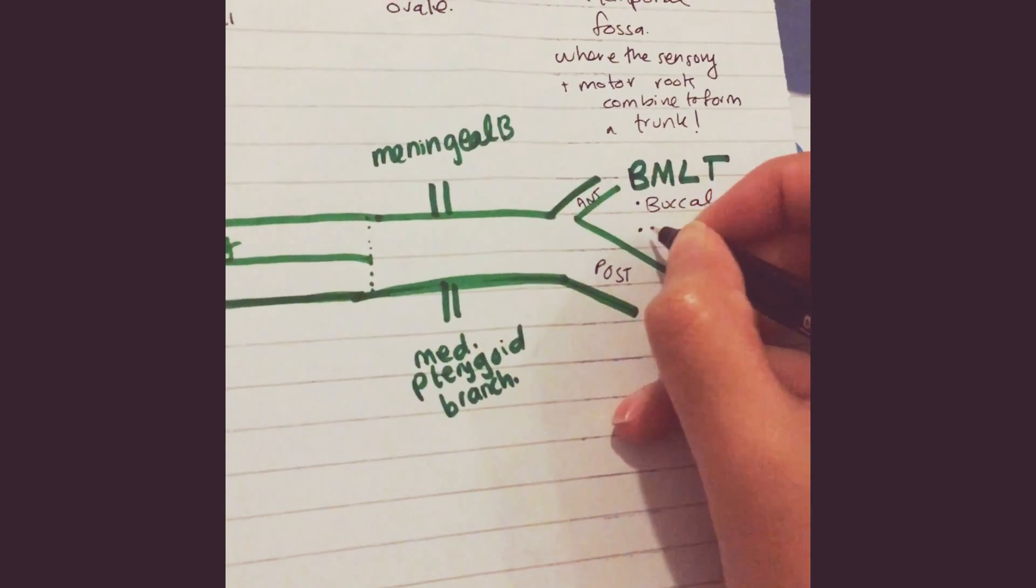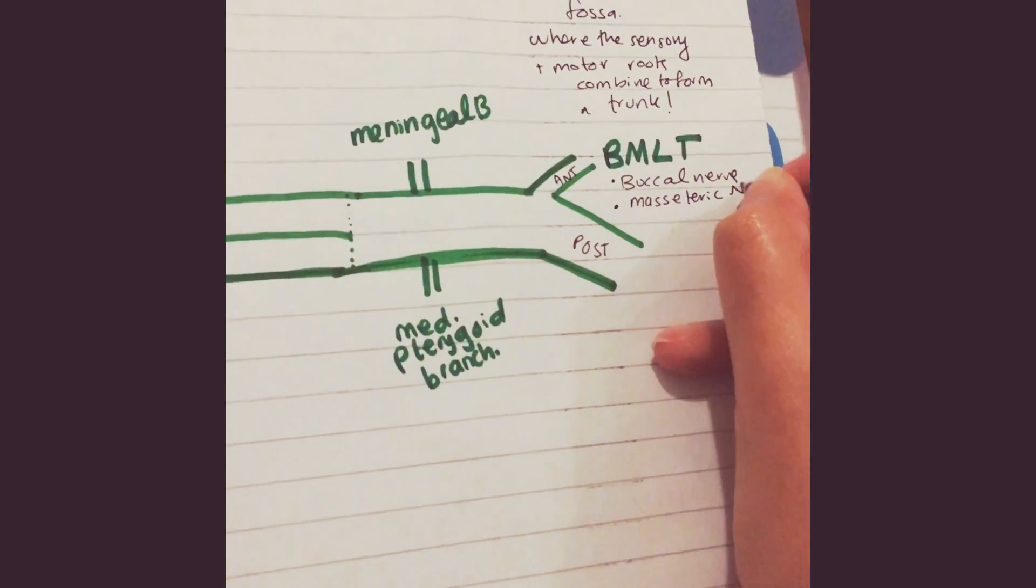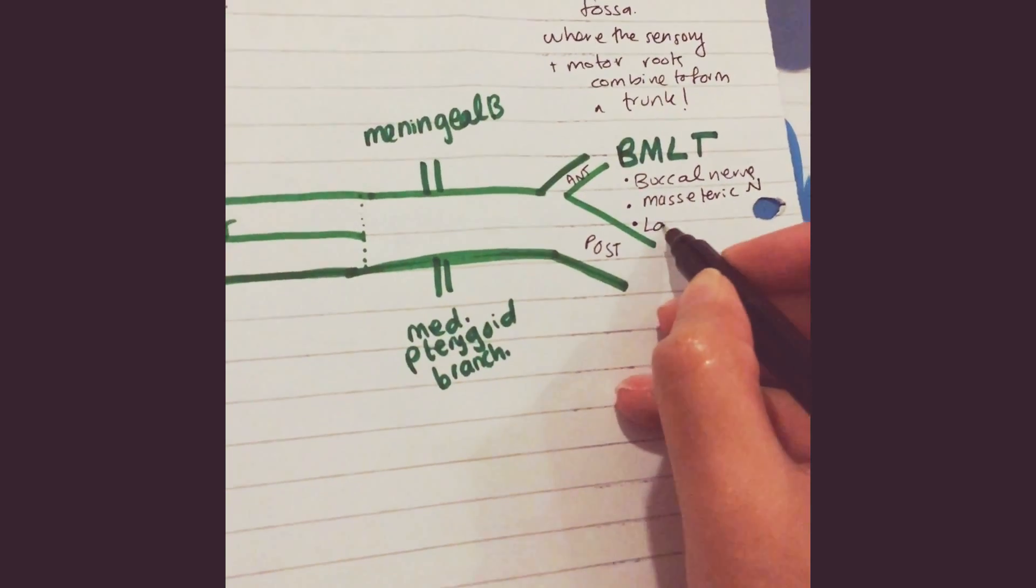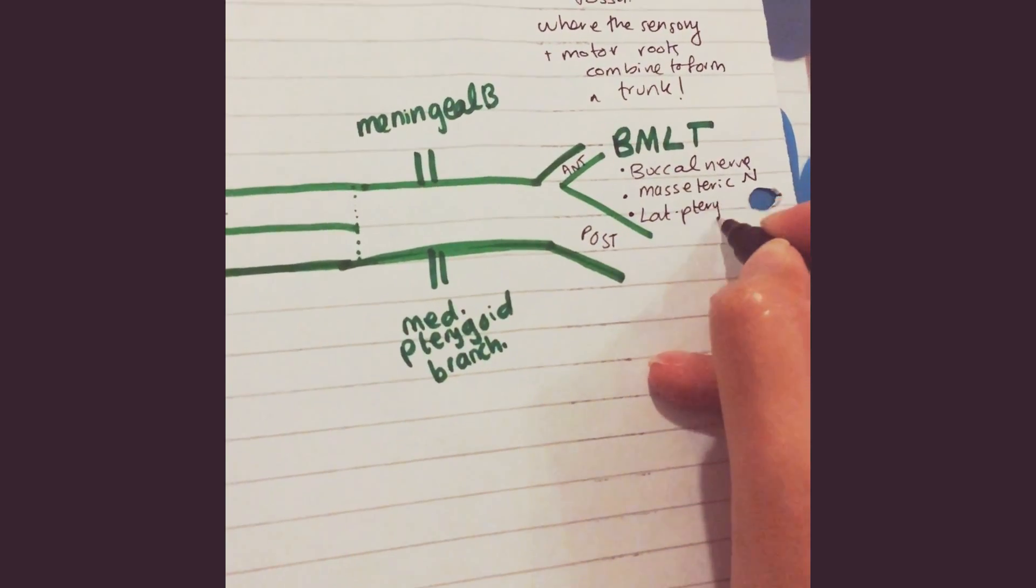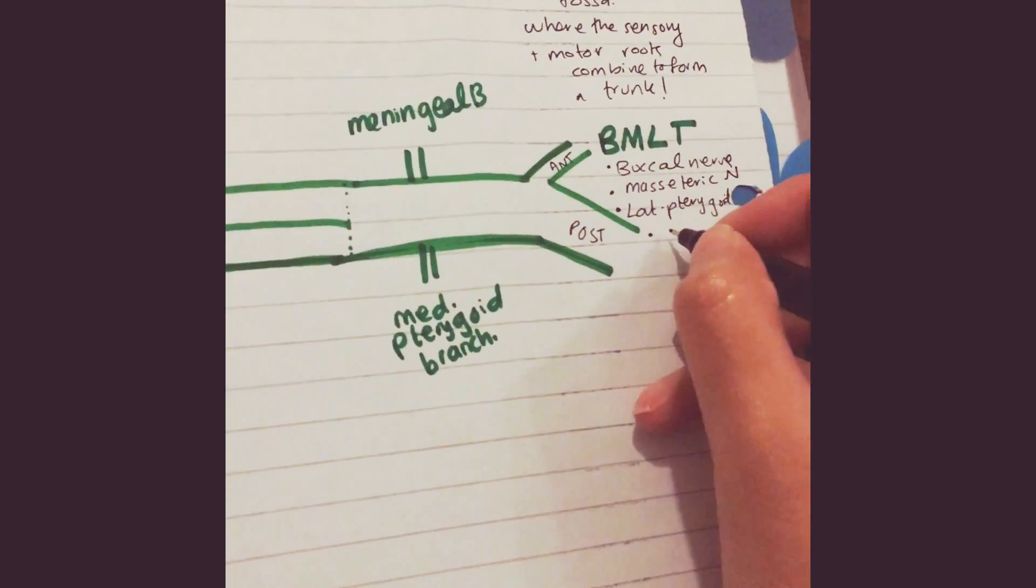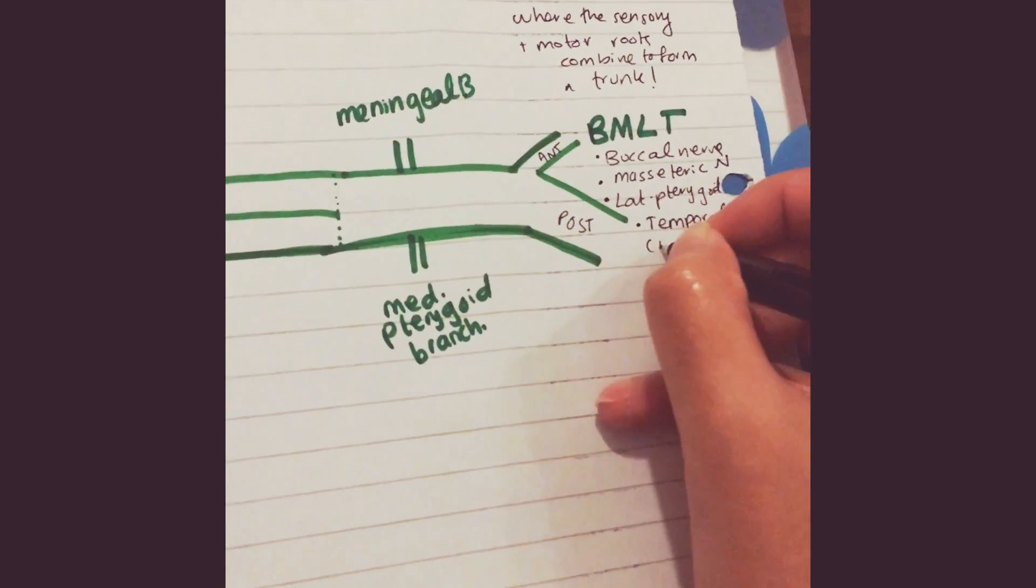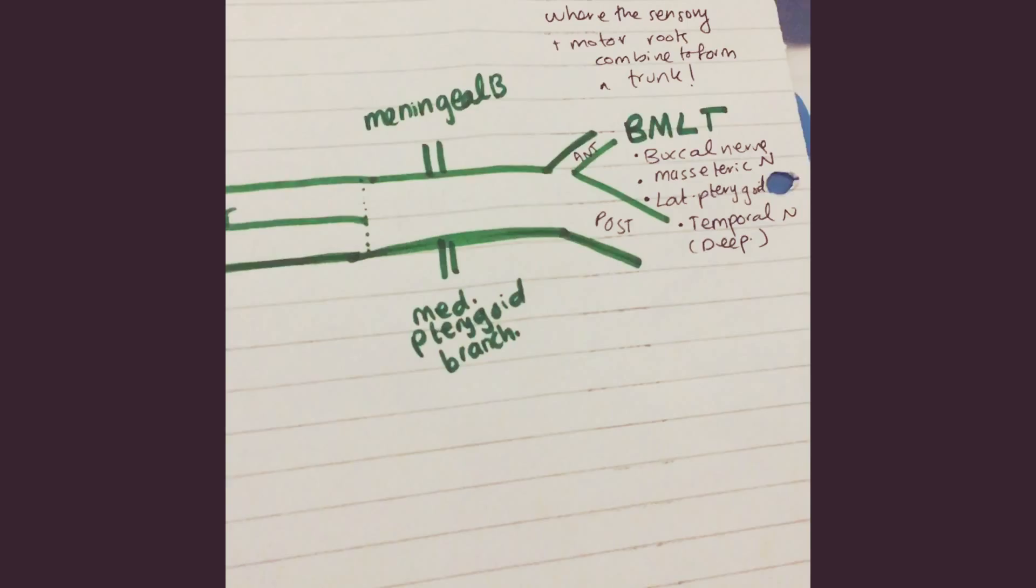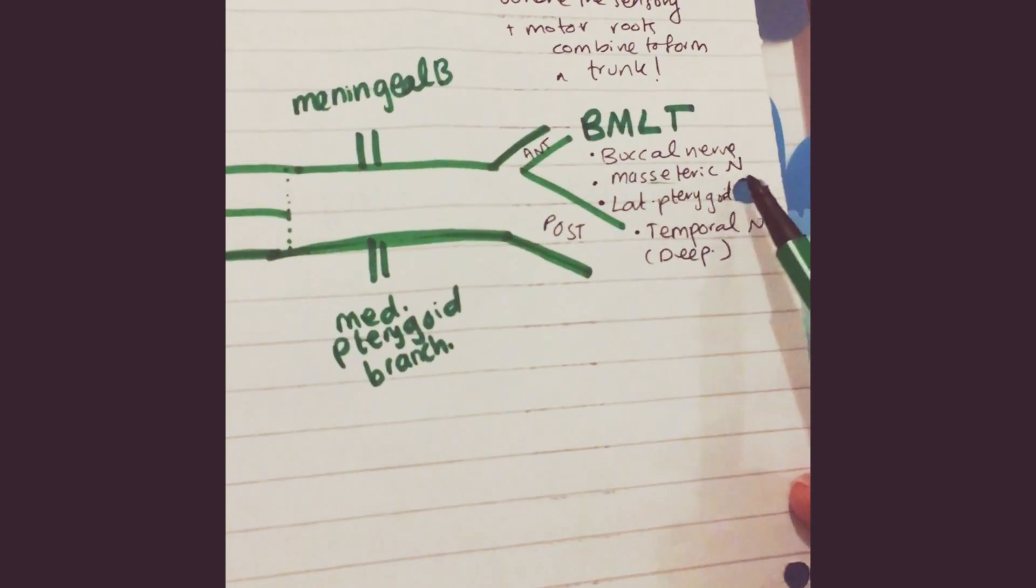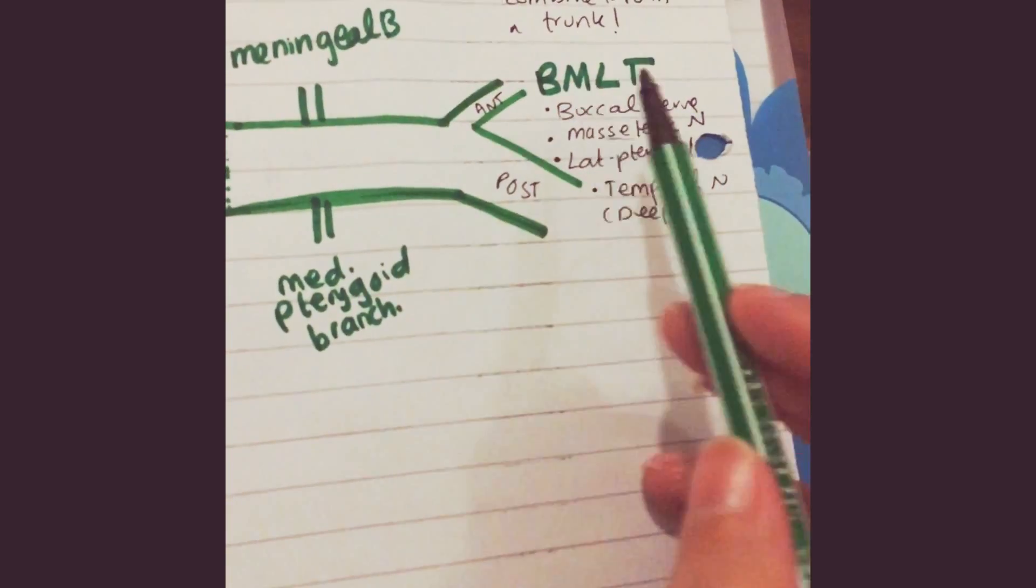M is your masseteric nerve, L is your lateral pterygoid nerve, and T is your temporal nerve, deep. So BMLT: buccal nerve, masseteric nerve, lateral pterygoid nerve, and temporal nerve. These are the branches of the anterior portion.